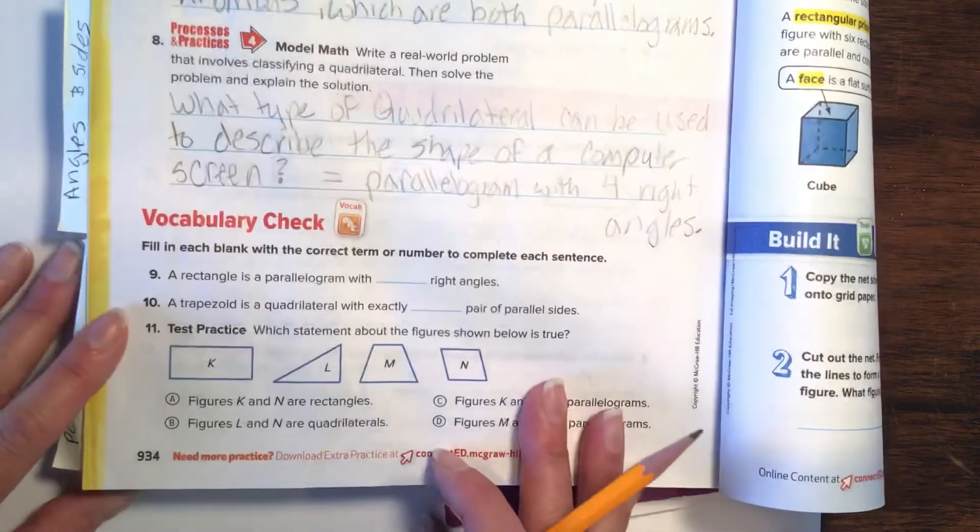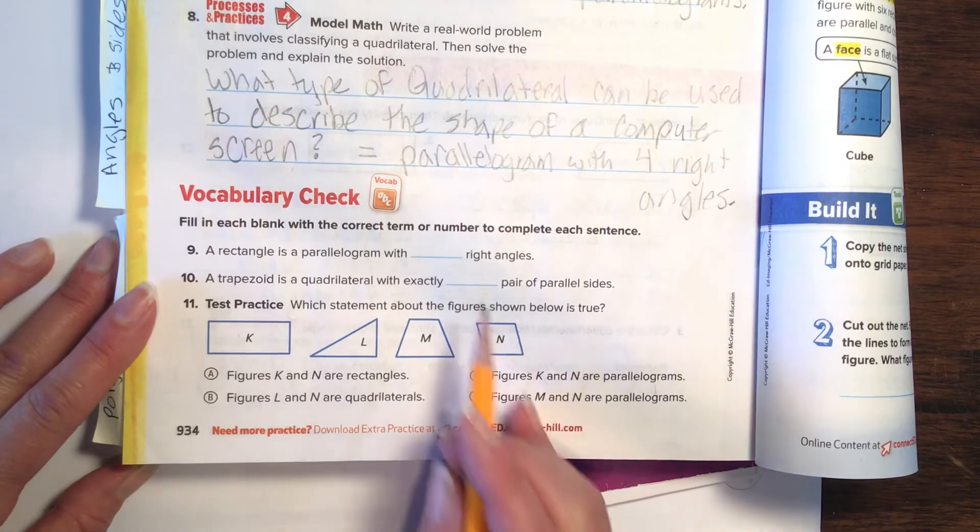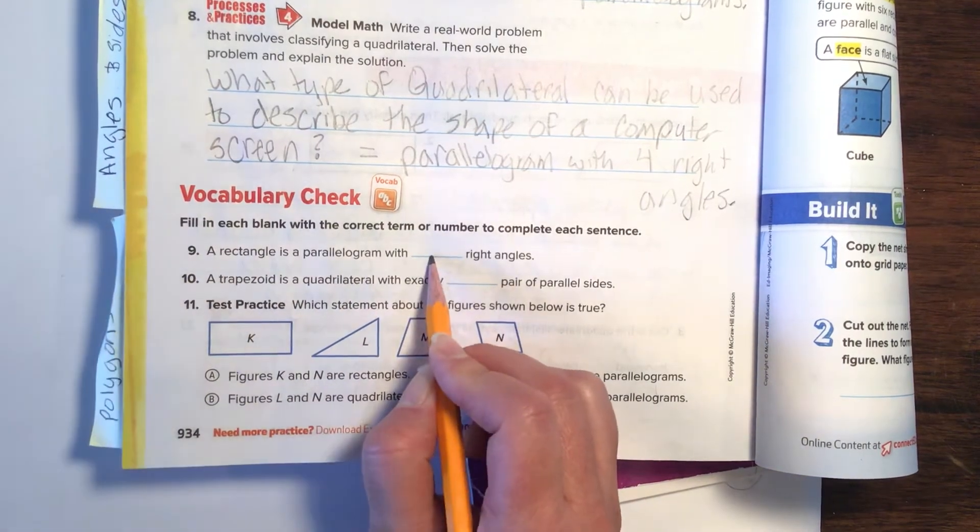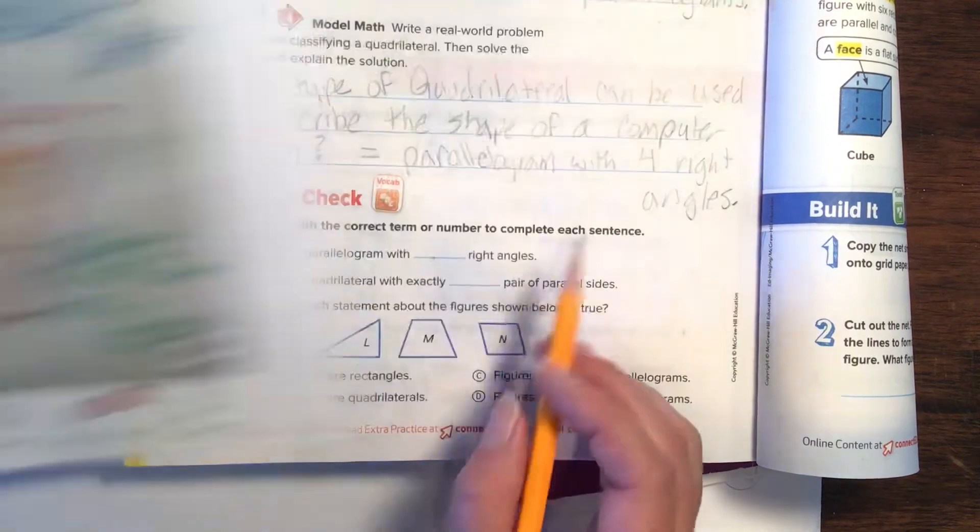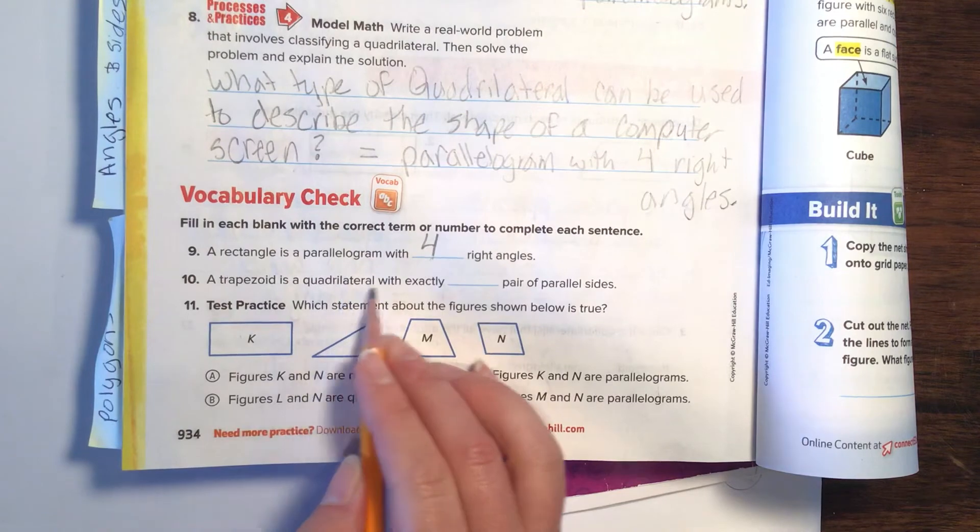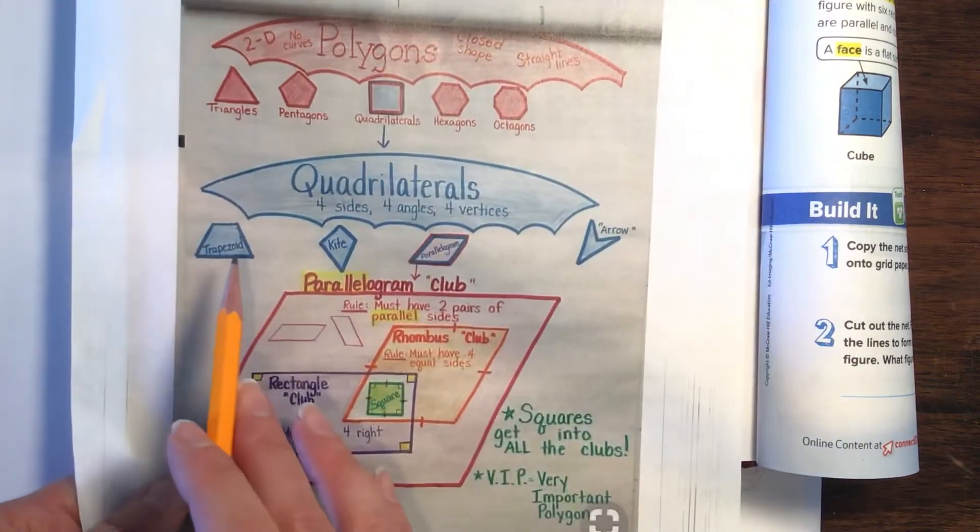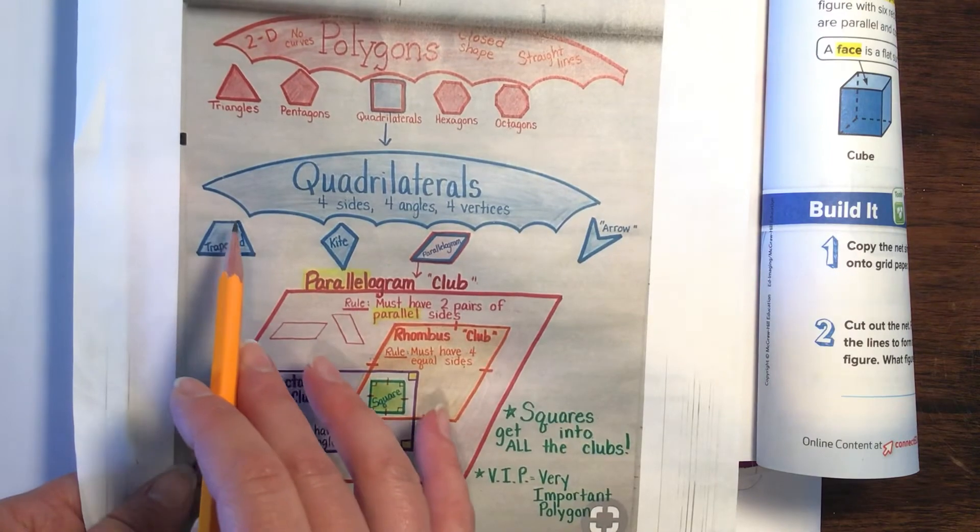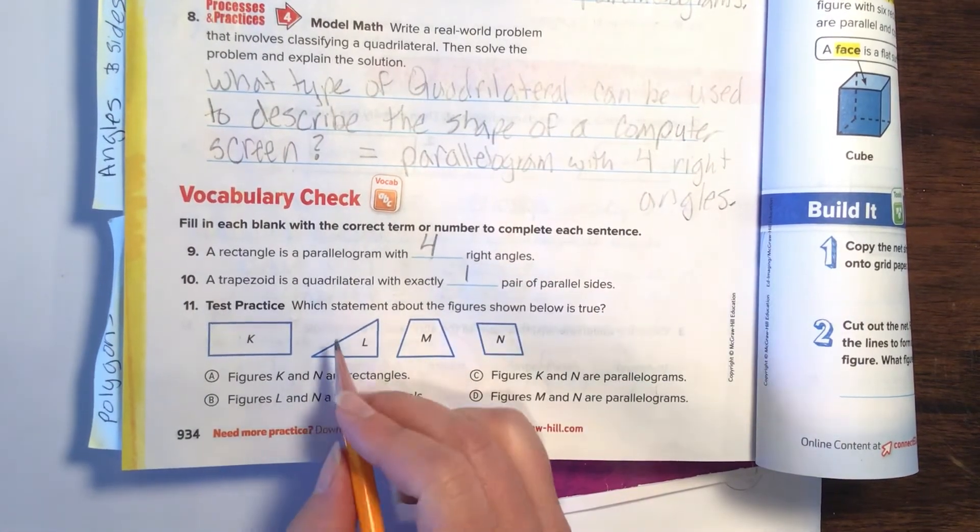Let's work on vocabulary. A rectangle is a parallelogram with how many right angles? Well, let's count. One, two, three, four. Four right angles. A trapezoid is a quadrilateral with exactly how many pairs of parallel sides? Oh, remember, it's out here in outer darkness because it only has one pair of parallel sides.